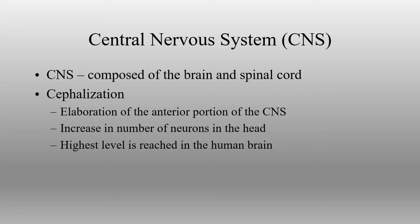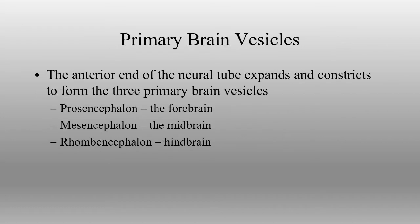Early on in development, as that neural tube is developing, we start to see cephalization of neurons. The nervous system itself is starting to coalesce into a larger number of neurons that are beginning to develop towards the head side of the developing embryo. This process brings the highest level of consolidation of neurons to the head region, and it begins relatively early on in development.